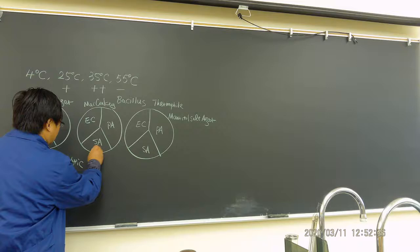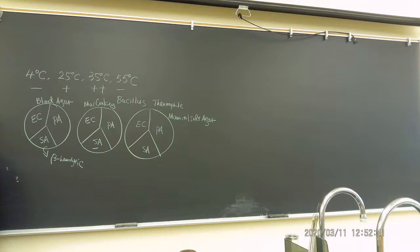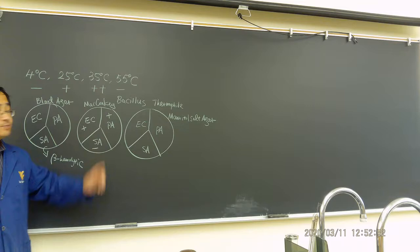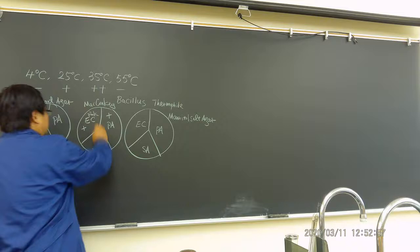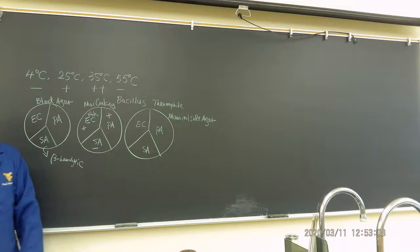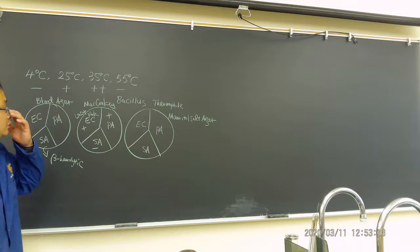On MacConkey agar, Staphylococcus aureus should not grow because it's a gram-positive bacteria — no growth. E. coli and Pseudomonas aeruginosa should both grow well. E. coli should be pink, because E. coli is lactose fermentation positive. Pseudomonas aeruginosa is colorless. It may look different after a week, but fresh E. coli should be pink.